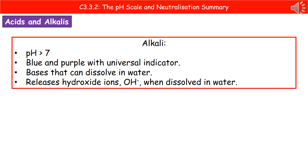For an alkali, thinking back to key stage 3, we know they've got a pH of greater than 7 and that if we add universal indicator to them, they go blue and purple. One thing we need to know for GCSE is that an alkali is a base that can dissolve in water. So all alkalis are bases, but not all bases are alkalis, because there are some that will not dissolve in water. When they dissolve in water, they release hydroxide ions — OH minus — and those are what make it an alkali.